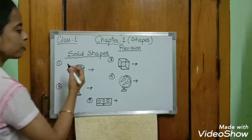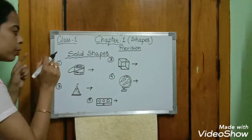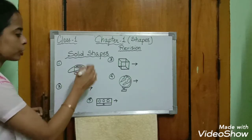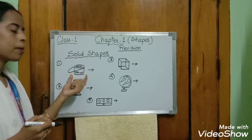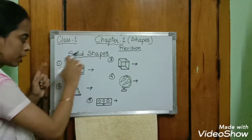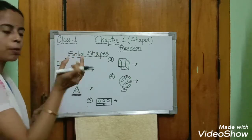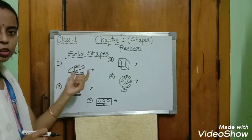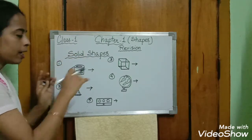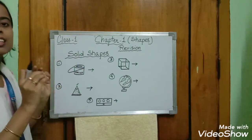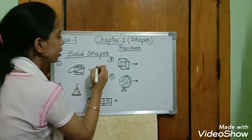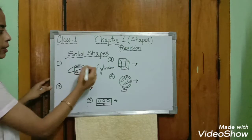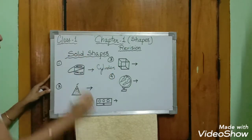Here I have drawn some solid objects, and we are going to relate each solid object with its solid shape. Look at the first one — it is a paint bucket. Which solid shape is it similar to? The paint bucket has a cylinder shape. So we write: cylinder. C-Y-L-I-N-D-E-R. Paint bucket is like a cylindrical shape.